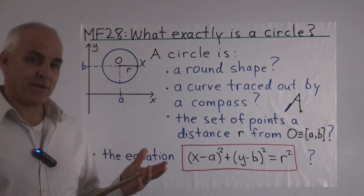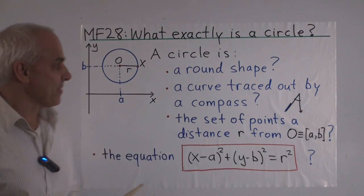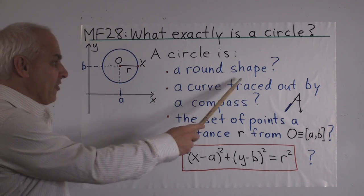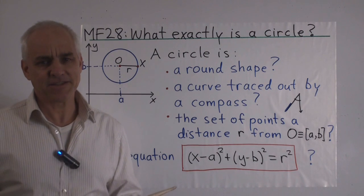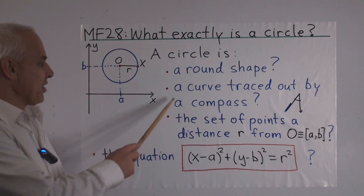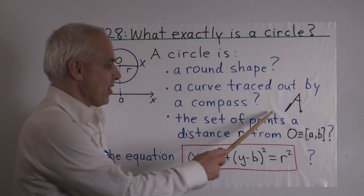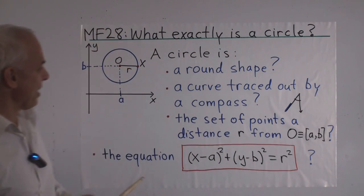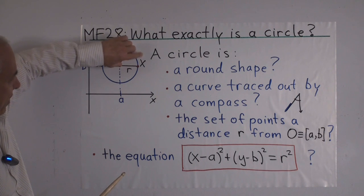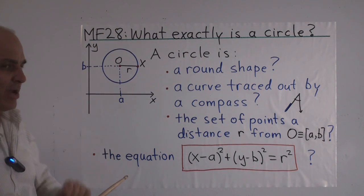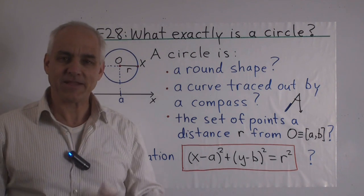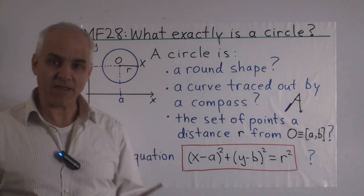There are some obvious candidates. We could say that a circle is just a round shape, but that's a little bit too vague. We can say that a circle is a curve traced out by a compass, one of those tools used by the ancient Greeks. You put one end there and then you swing the other end around and it traces out a circle. That's a little bit too physical and not mathematical enough.